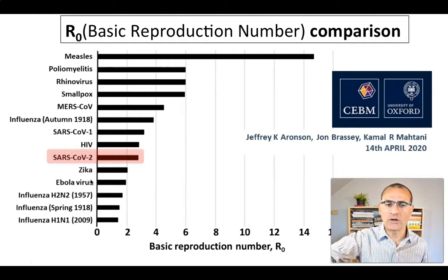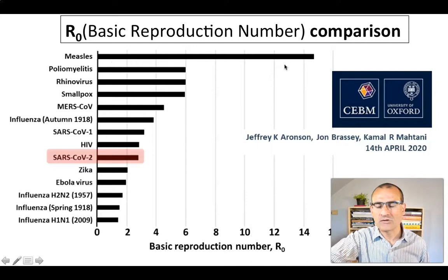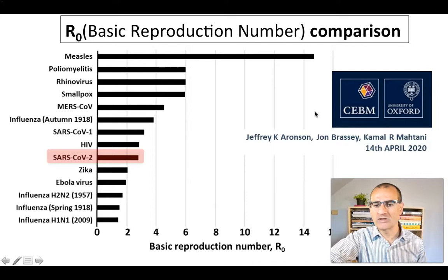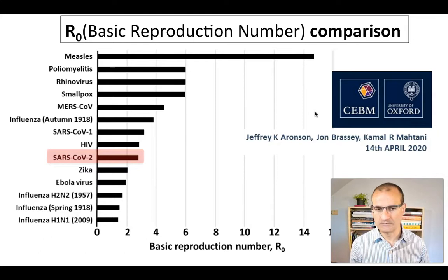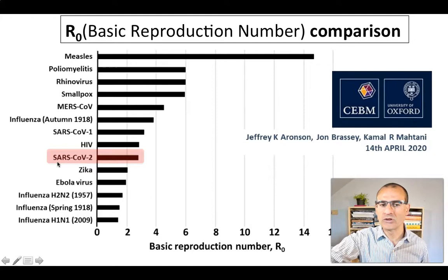When you compare it to the virus that produces measles, you can see that the measles virus is far more contagious than the virus that produces COVID-19. In the case of measles, according to the basic reproduction number, an infected individual can on average infect 14 to 15 new people — much higher than the two to three for SARS-CoV-2.